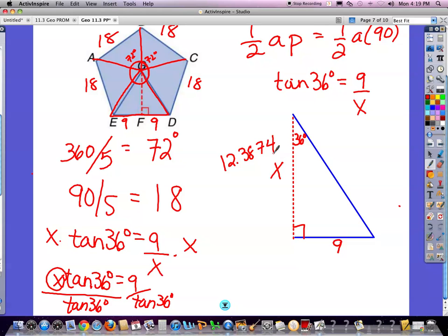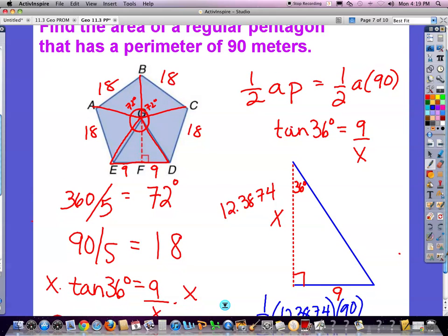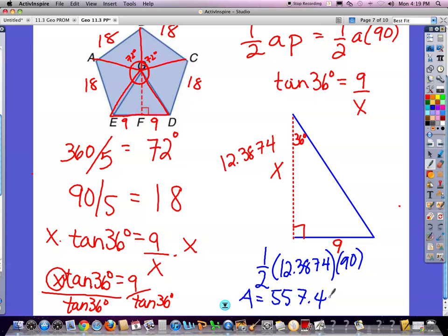Now when I work it out, I'm going to have one-half apothem 12.3874 times perimeter, which is 90. And now I'm going to recalculate that, and I'm getting 557.4. And now I'm going to round. So 557.4. It says meters, so my answer is 557.4 meters squared for area.